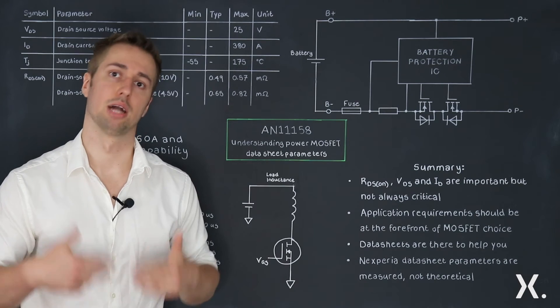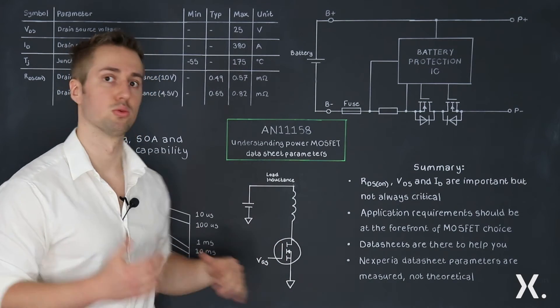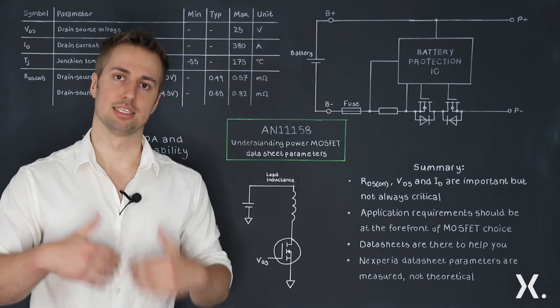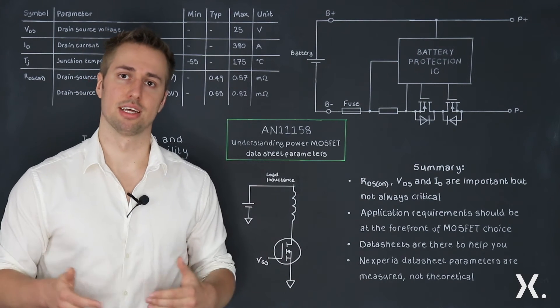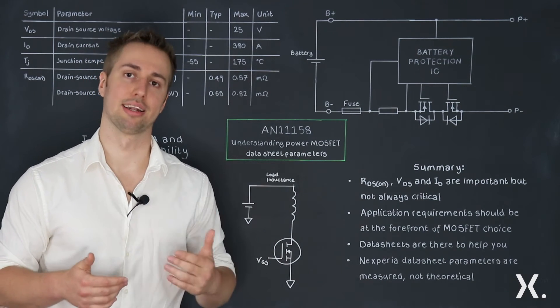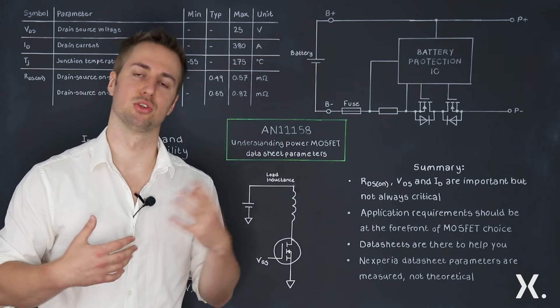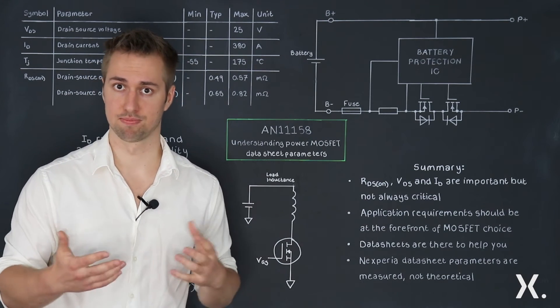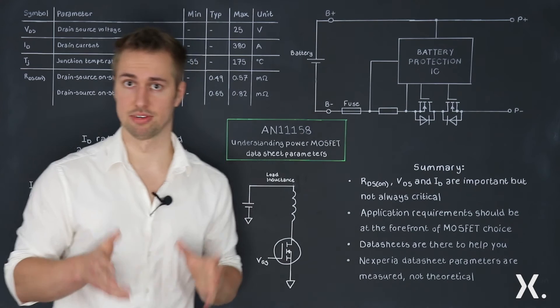If you want the MOSFET to quickly turn off, the energy has to go somewhere. What will happen is that the drain source voltage will start increasing, and as it starts increasing you will actually avalanche the MOSFET. The MOSFET will then have to dissipate and handle this event. This is where the avalanche rating of the MOSFET comes in, and this rating can also be found in a data sheet.